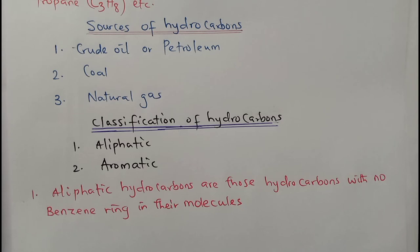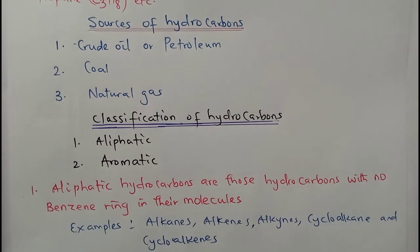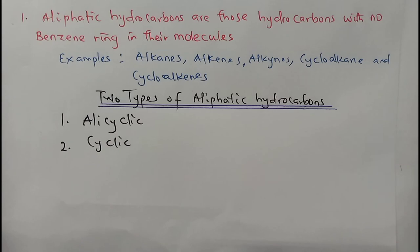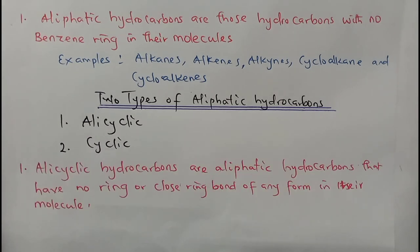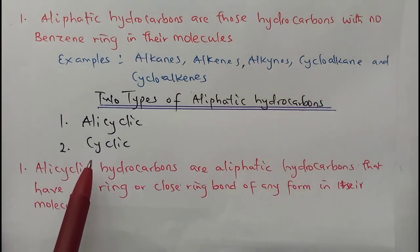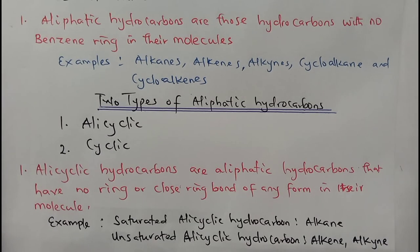Examples of aliphatic hydrocarbons include alkanes, alkenes, alkynes, cycloalkanes, and cycloalkenes. Aliphatic hydrocarbons are divided into alicyclic and cyclic hydrocarbons. Alicyclic hydrocarbons have no ring or closed ring bond — examples are alkanes, alkenes, and alkynes. The prefix 'cyclo' refers to a cycle or closed ring. Saturated alicyclic hydrocarbons are alkanes, while unsaturated alicyclic hydrocarbons are alkenes and alkynes.